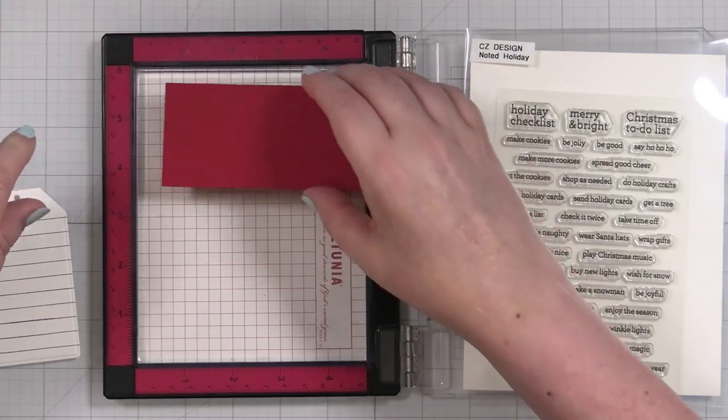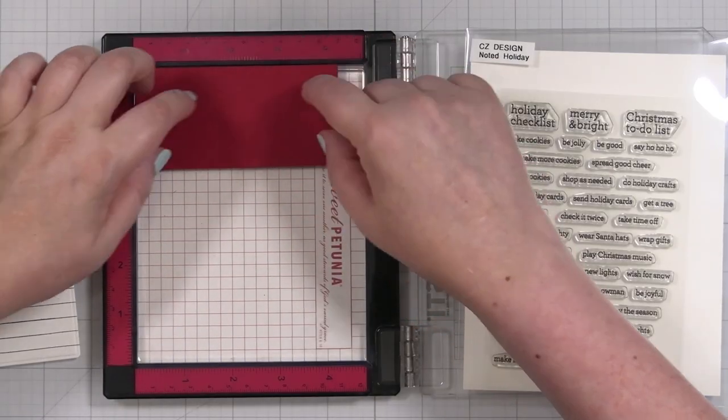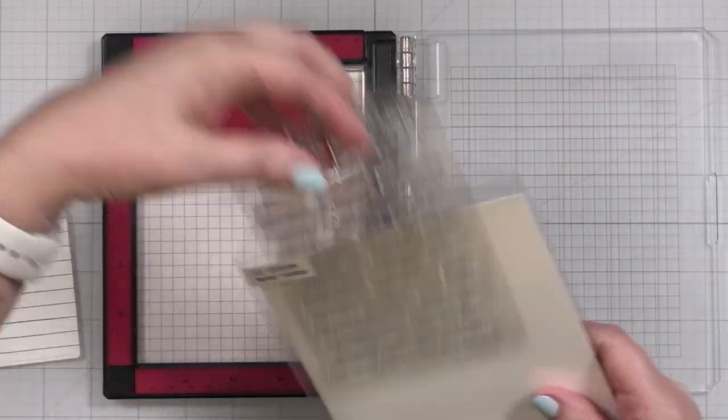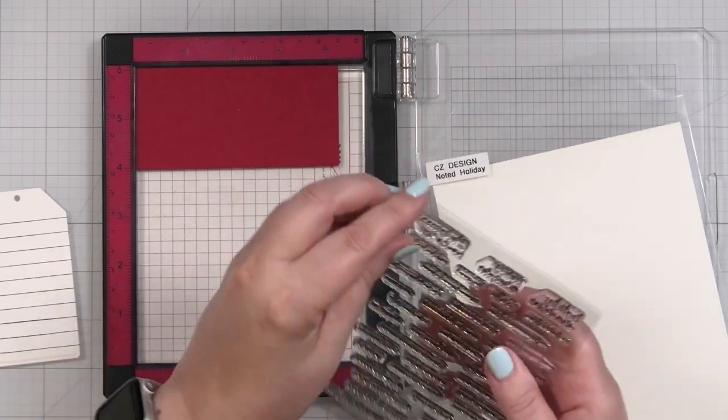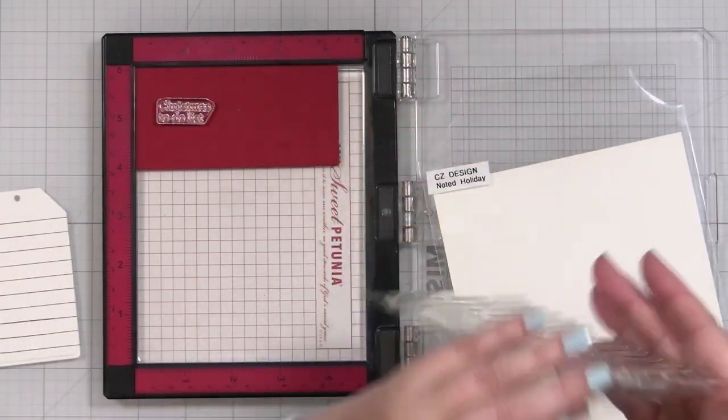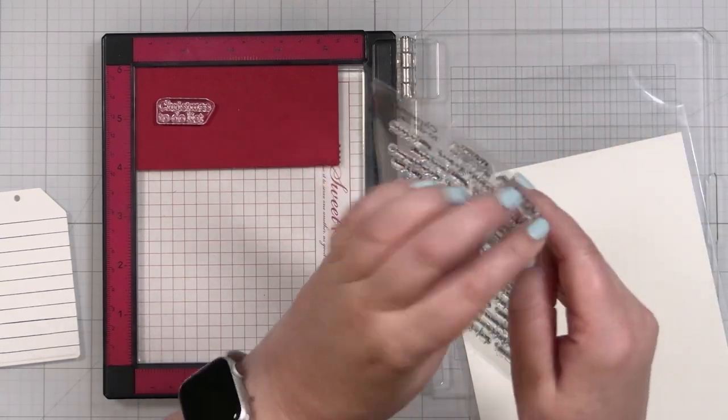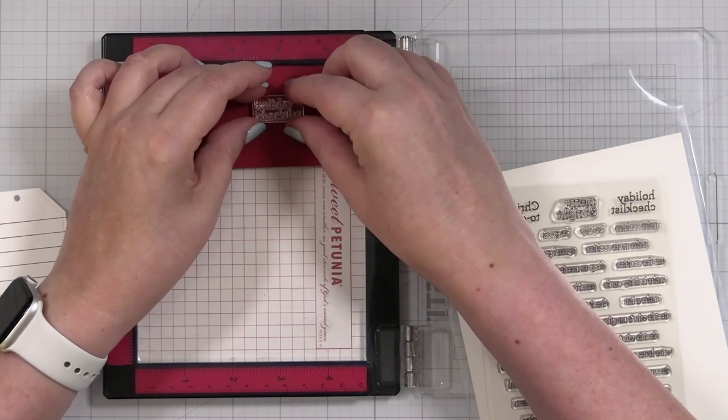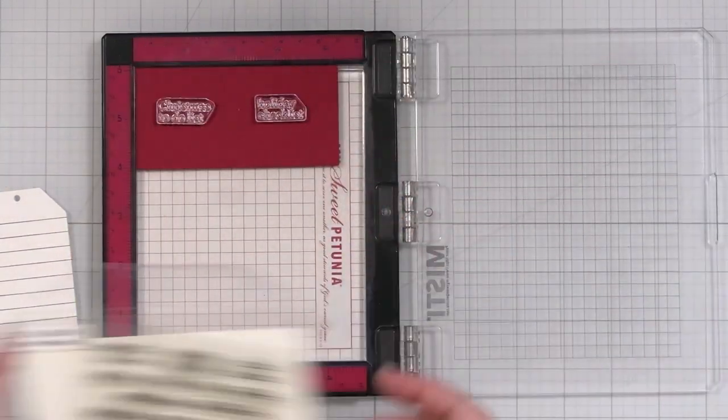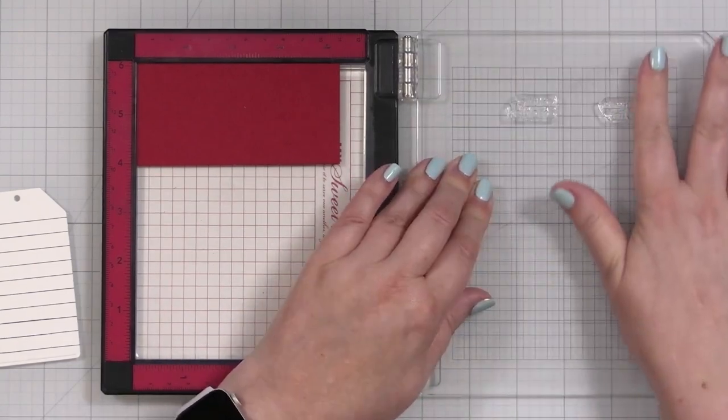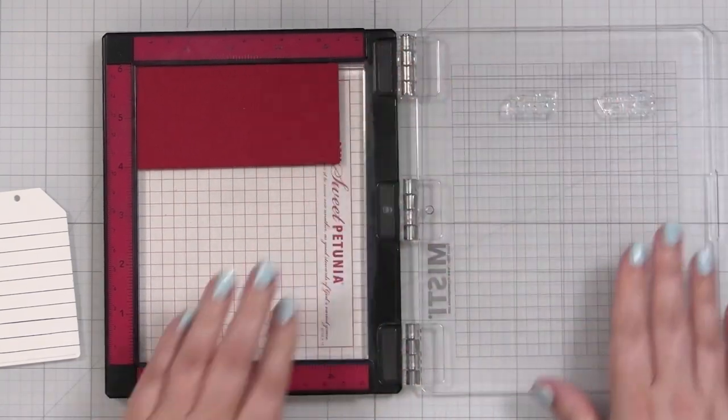I'm going to take a little scrap of Simon Says Stamp Schoolhouse Red, and I think I'll just say this is my Christmas to-do list. Actually, I could do two at a time, and that way if one doesn't stamp as well as the other, you just use the one that works. So pop these onto the cardstock, pick up, and I'm going to prime these just a little because they're brand new.